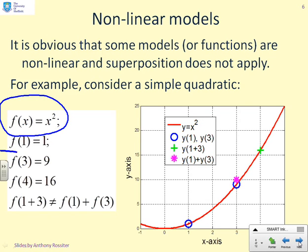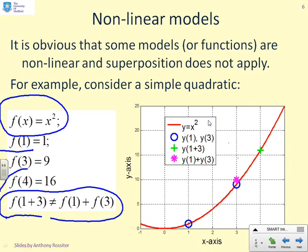What I'm going to do is put in 1 and look at this calculation down here at the bottom, f of 1 plus 3, which you'll recognize is f of 4. The key thing is f of 4 is not equal to f of 1 plus f of 3.